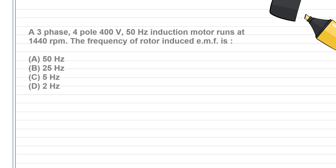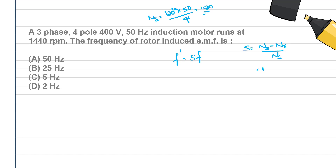The frequency of the rotor-induced EMF is f' = s × f, where s is the slip and f is the supply frequency. Slip s = (Ns − Nr) / Ns. Ns = 1500 RPM, Nr = 1440 RPM. So s = (1500 − 1440) / 1500 = 60 / 1500 = 0.04. Therefore rotor frequency f' = s × f.